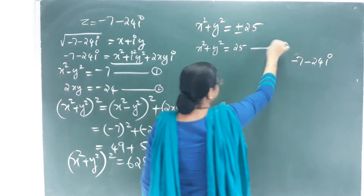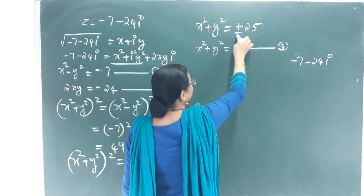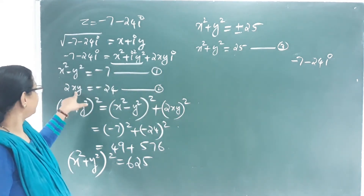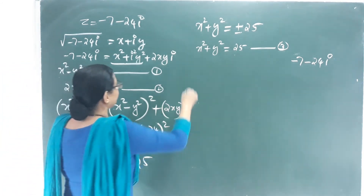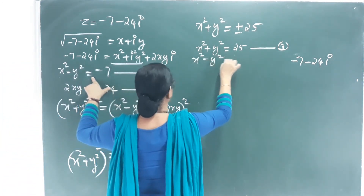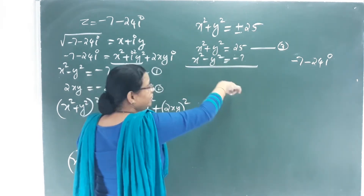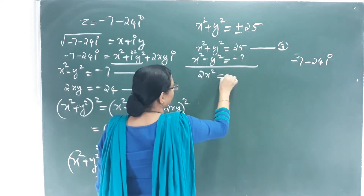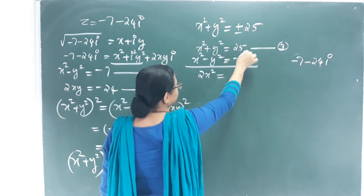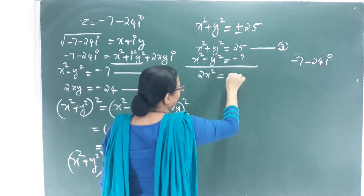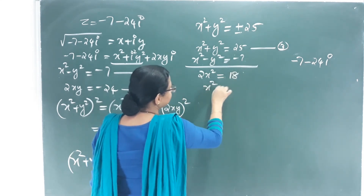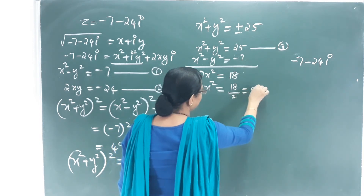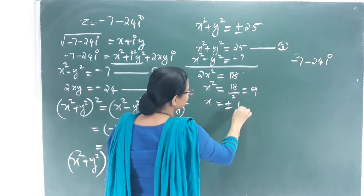Adding Equation 1 and Equation 3: (x² − y²) + (x² + y²) = −7 + 25 = 18, so 2x² = 18, giving x² = 9, and x = ±3.